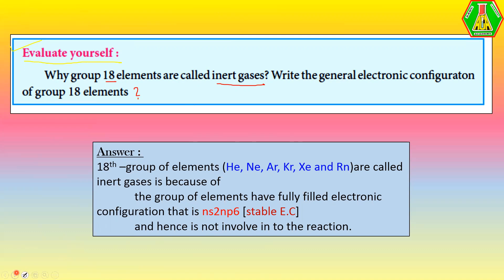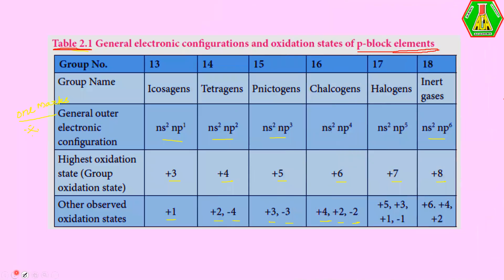Let's look at the general electronic configuration and oxidation state of P-block elements in a tabular column. For group 13 elements, the valence electron count is 3, so the general outermost electronic configuration is ns²np¹. The group oxidation state is +3, and the other observed oxidation state is +1 also.